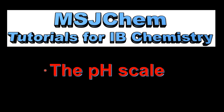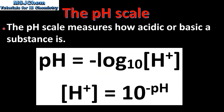This is MSJChem. In this video I'll be looking at the pH scale. The pH scale measures how acidic or basic a substance is. The pH of a substance is equal to the negative log to the base 10 of its hydrogen ion concentration.